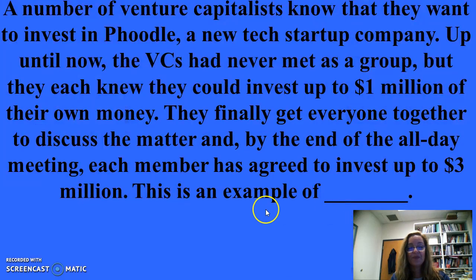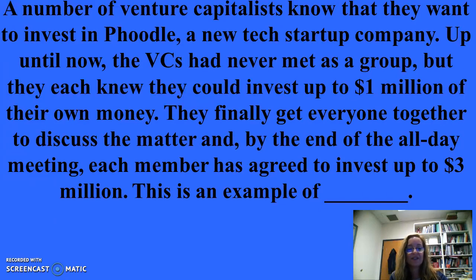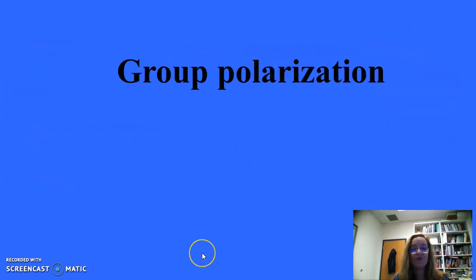For 300: A number of venture capitalists want to invest in Foodle, a new tech startup. Each knew they could invest up to $1 million individually. After an all-day group meeting, each member agrees to invest up to $3 million. This is an example of group polarization — the tendency of group members to move toward a more extreme position than their original position simply as a result of group discussion.